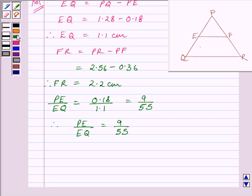Now, let us find out PF upon FR. Here, we know PF upon FR is equal to 0.36 upon 2.2, which is further equal to 9 upon 55. So therefore, PF upon FR is equal to 9 upon 55.